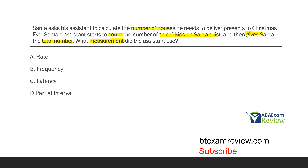If it said something like Santa needs to deliver to a hundred houses per minute, that would be rate. But we simply just have a total number of kids who are nice on Santa's list. So the measurement we're looking at is B — frequency. Frequency is also known as the count.